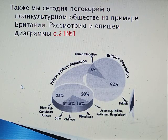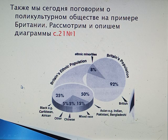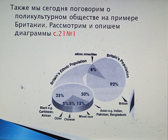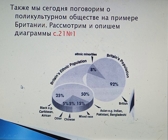The second part of our lesson. We are speaking about multicultural society. You have got some pie diagrams and we are speaking about Britain's population.